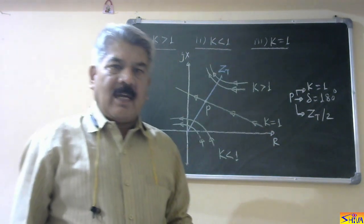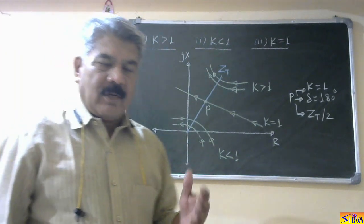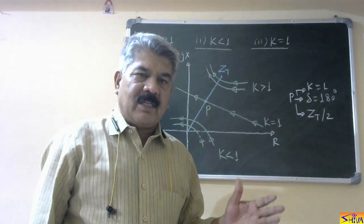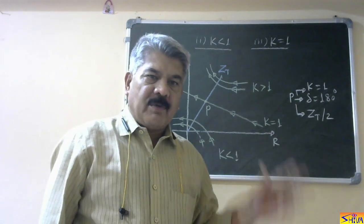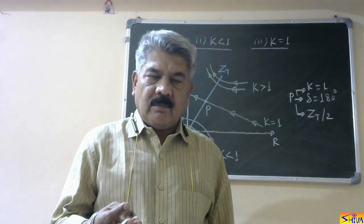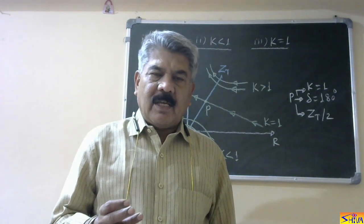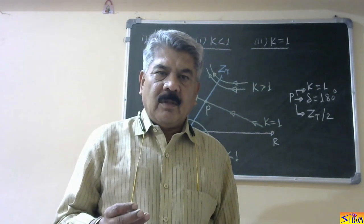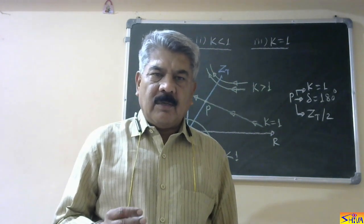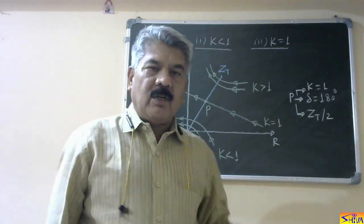In my next class, I will explain how this swing impedance locus affects the performance of distance relays. For analysis purpose, we assume K equal to 1, and then I will discuss the effect of power swing on the performance of distance relays. In this video lecture, I have explained what is power swing, the reference system, power flow equations, and the equation showing the effect of changing delta and K on Zr — that is, the impedance measured by the relay, which changes according to the values of K and delta.